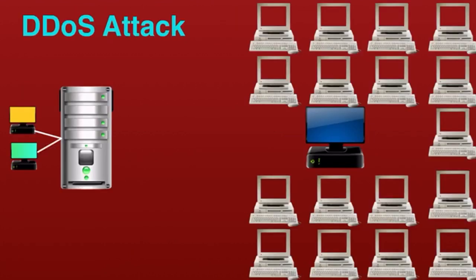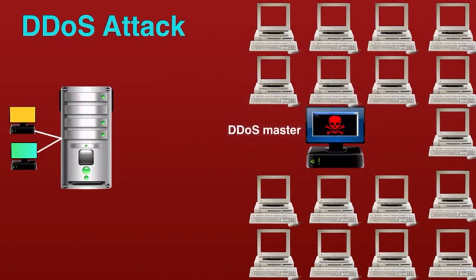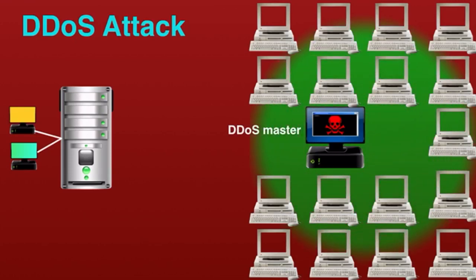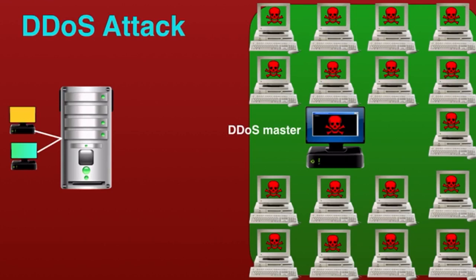In a typical DDoS attack, the attacker exploits a vulnerability in one computer system, making it the DDoS master. The attack master system identifies other vulnerable systems and gains control of them by infecting them with malware.